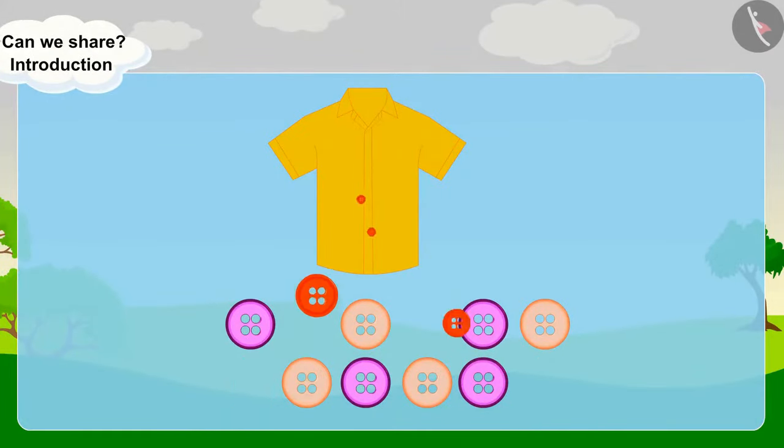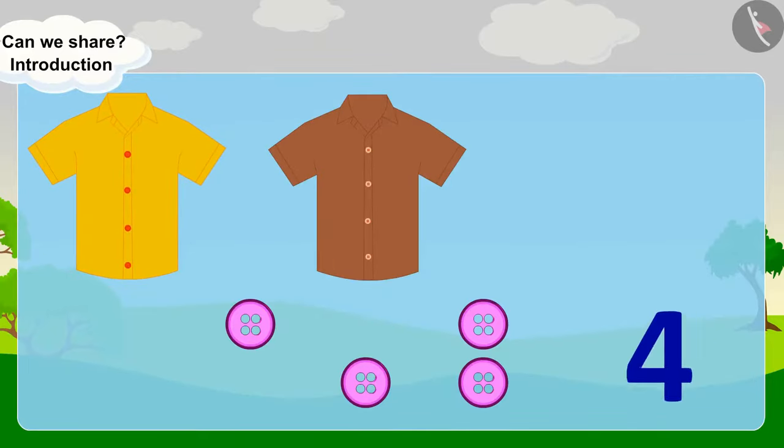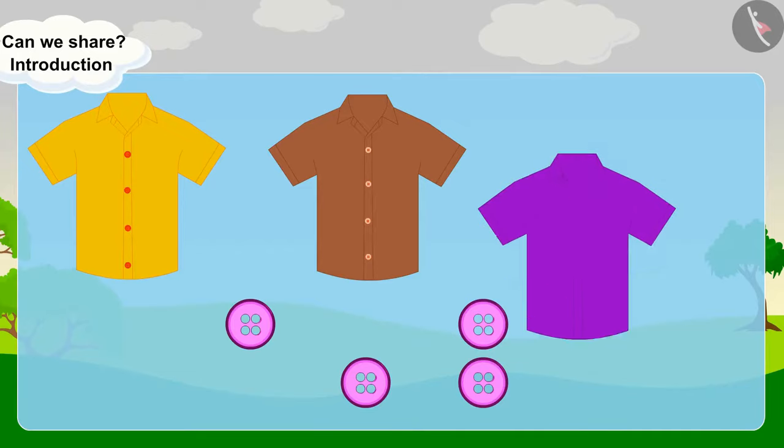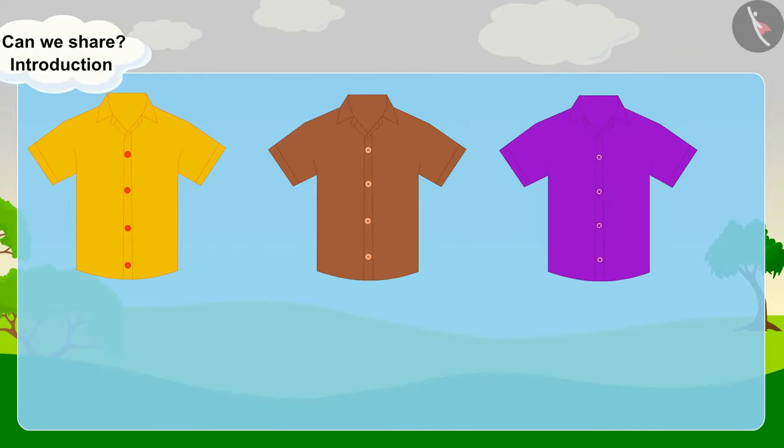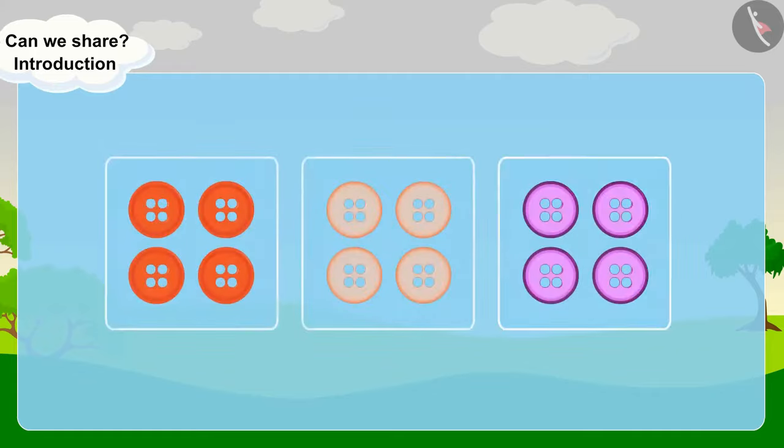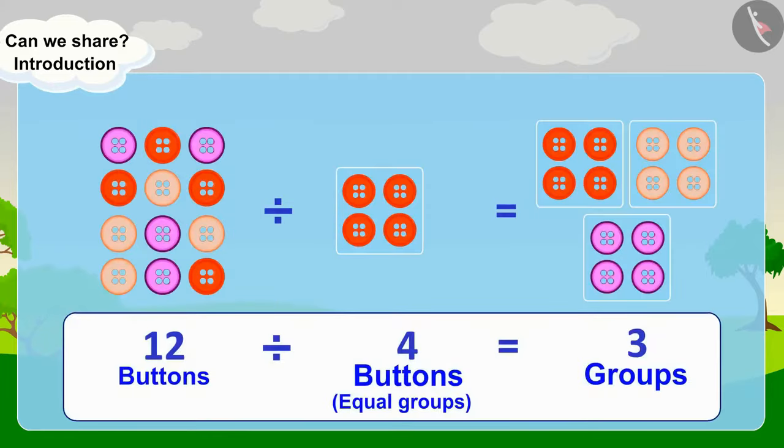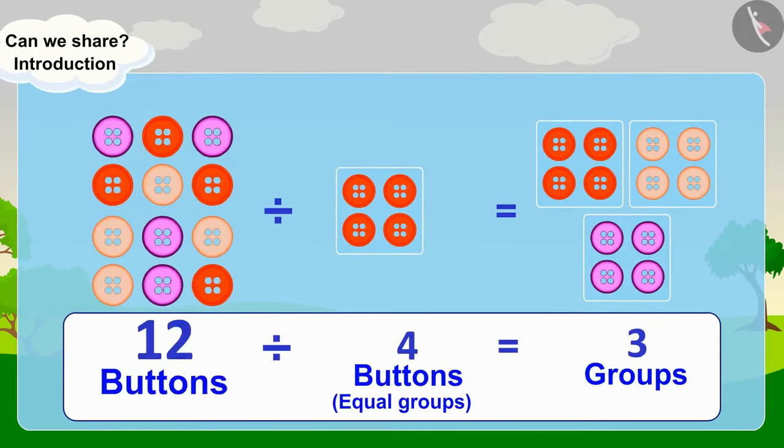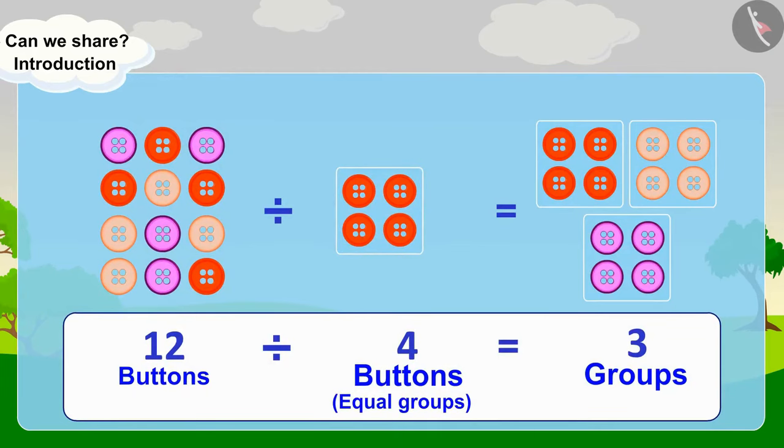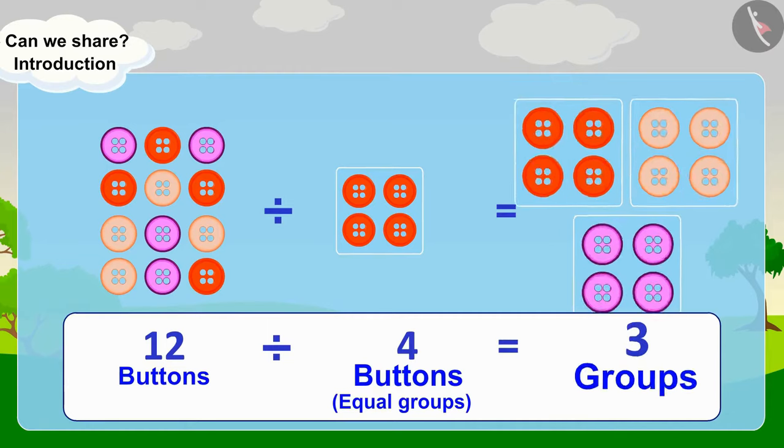After putting four buttons on the first shirt, the tailor had eight buttons left. Now, four buttons are left after putting four buttons on the second shirt. After putting four buttons on the third shirt, all the buttons are over. After creating groups of four buttons, twelve buttons were divided into three groups.